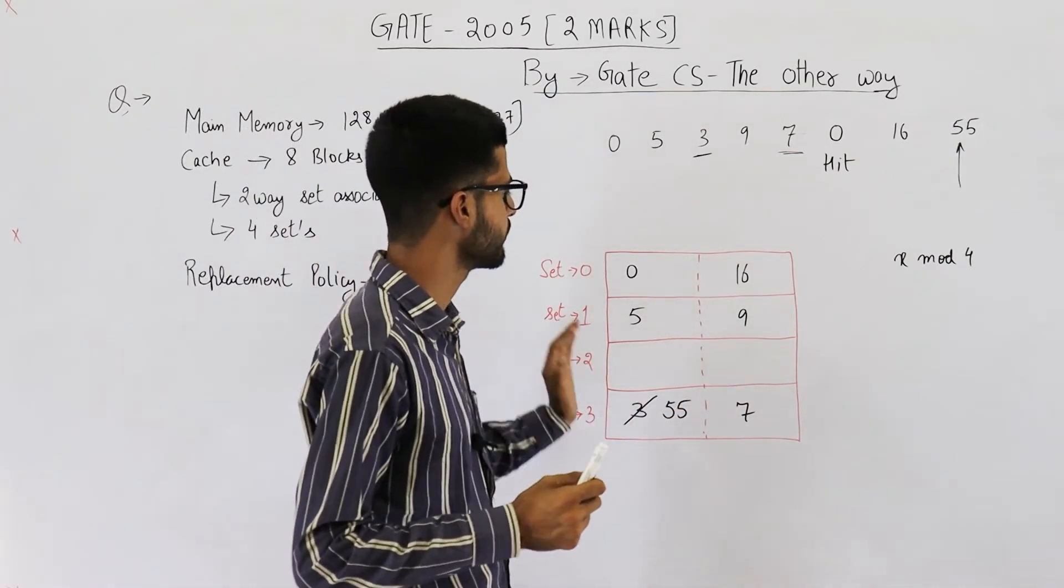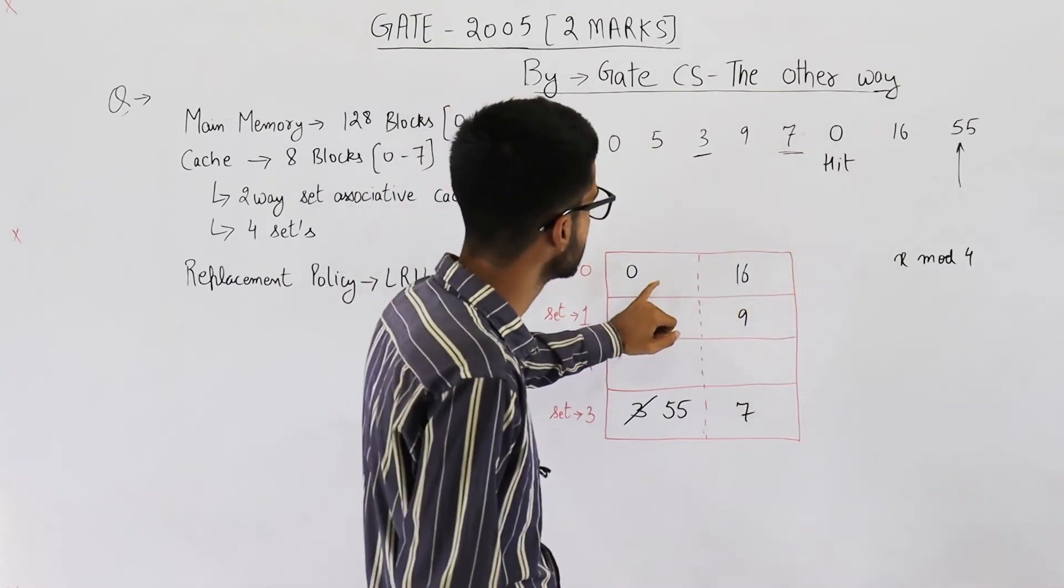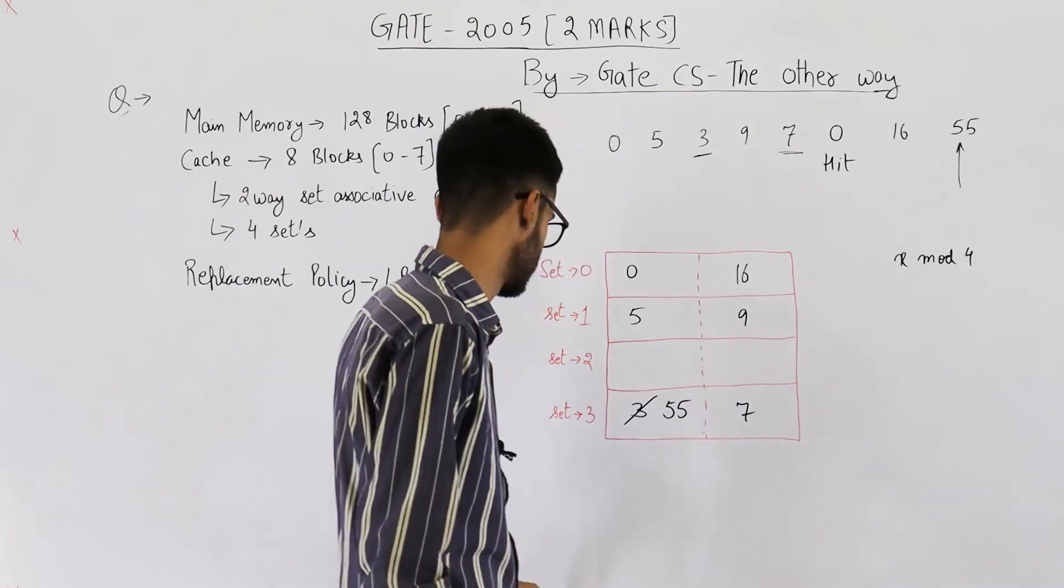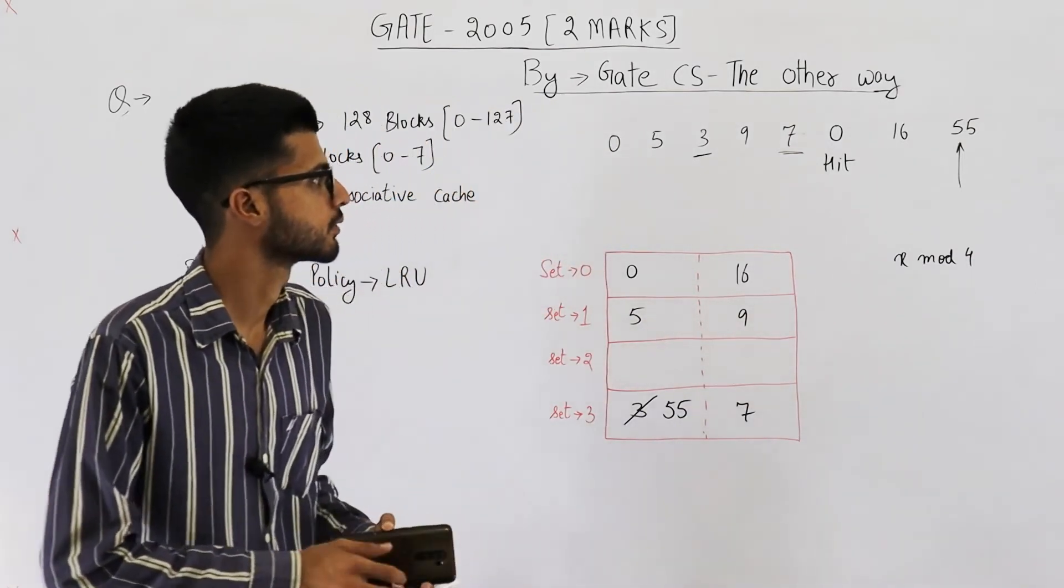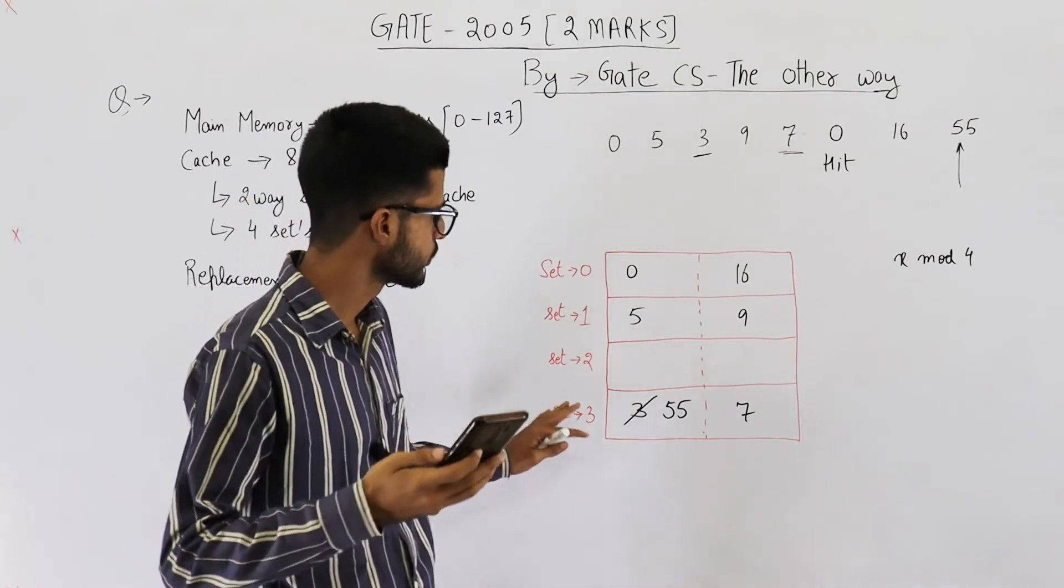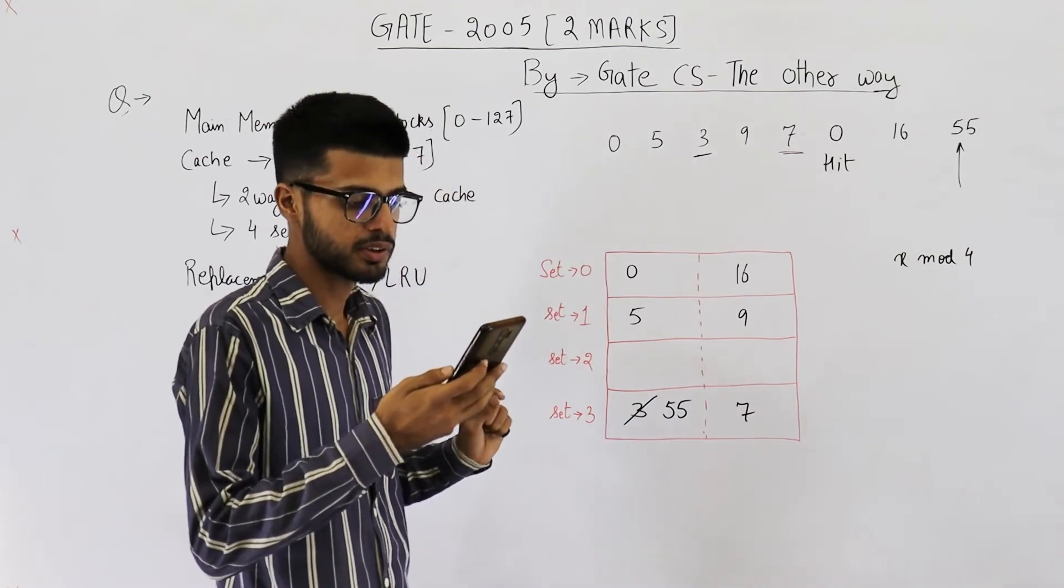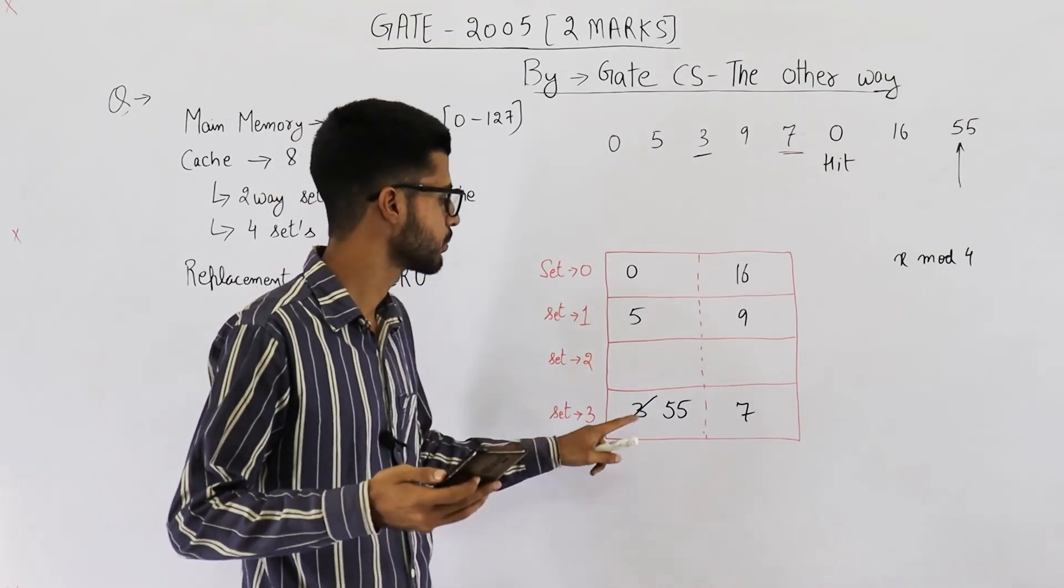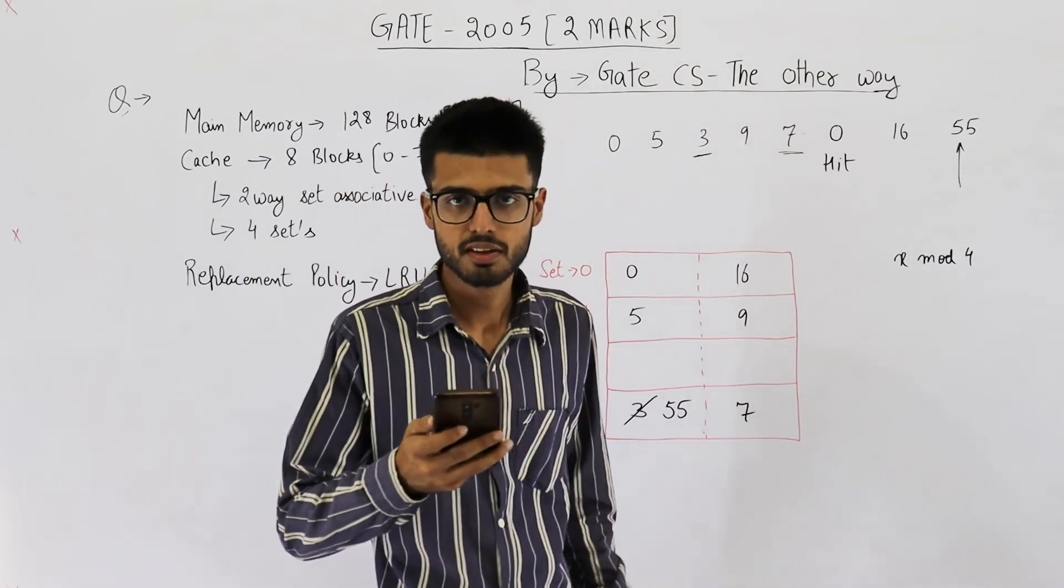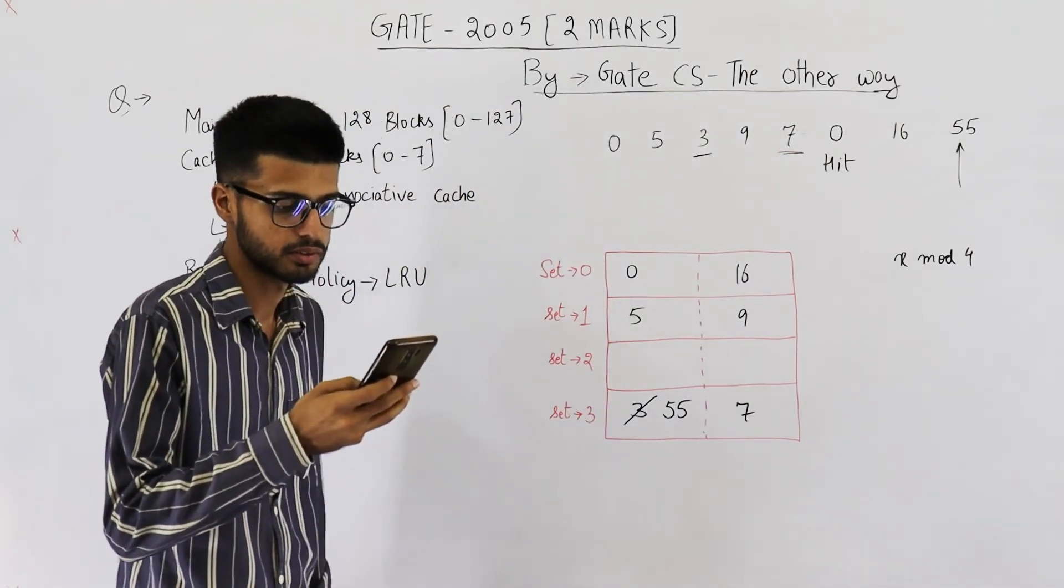So, the blocks of main memory that will be present in cache after this execution will be 0, 16, 5, 9, 55 and 7. Let's see which option is this. We have 0. So, we don't have block number 3 and option C is the only option where block number 3 is not mentioned in the sequence. So, A, B and D can be easily rejected. Your answer is option number C.